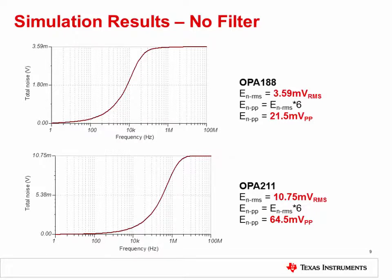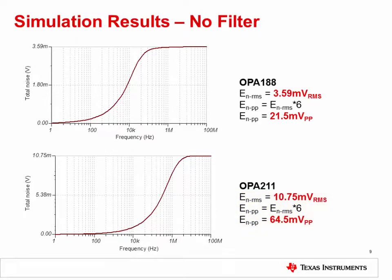Over the 100 megahertz frequency range, the OPA188 circuit has a total noise of 3.59 millivolts RMS or 21.5 millivolts peak to peak. The OPA211 circuit has a total noise of 10.75 millivolts RMS or 64.5 millivolts peak to peak.